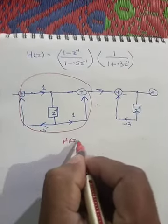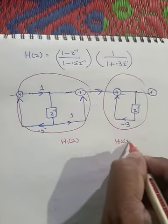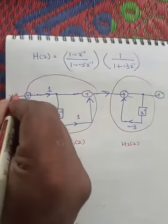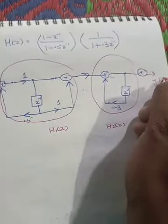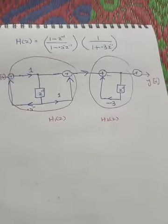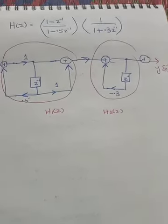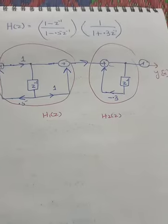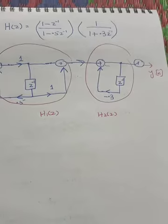H1 of Z is cascaded with H2 of Z. This is X of N, and this is Y. So this was all about the cascaded structure — in a cascaded structure, how you break down the system and then how you draw it. This was a simple example. Now we have to move toward the parallel structure.